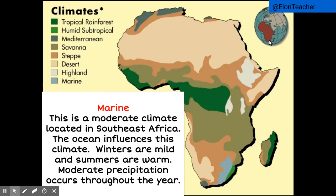As its name suggests, the marine climate is located along the coast. This is a moderate climate located in Southeast Africa. The ocean influences this climate. Winters are mild and summers are warm. Moderate precipitation occurs throughout the year.